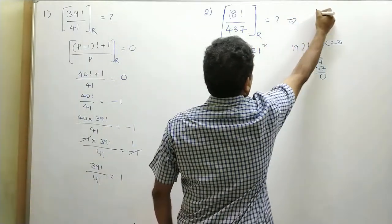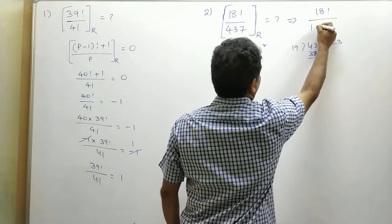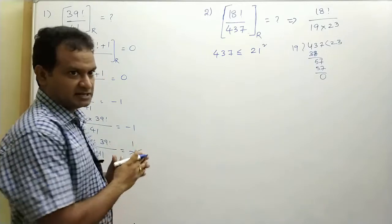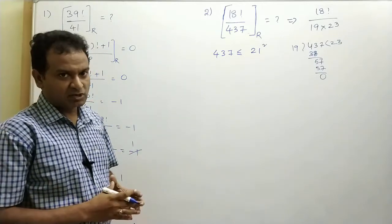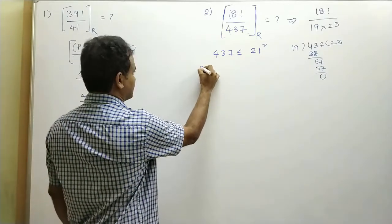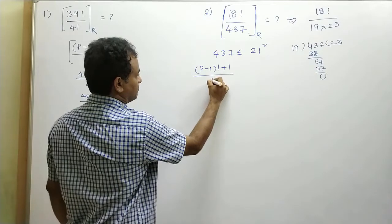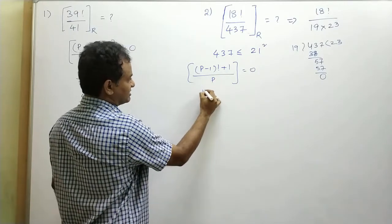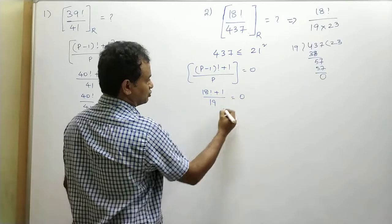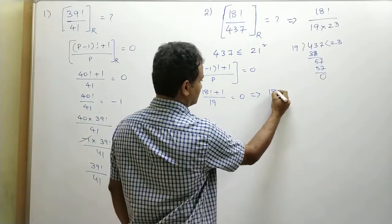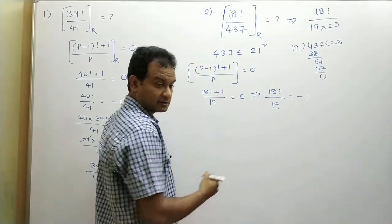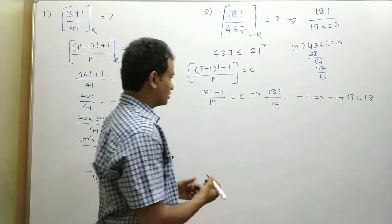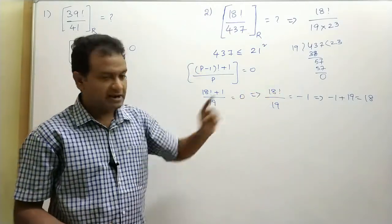Therefore, we need to find the remainder when 18 factorial is divided by 19 into 23. First, let us divide 18 factorial by 19 and check the remainder. 19 is a prime number, so we can apply Wilson's theorem. Wilson's theorem says (p-1) factorial plus 1, when divided by p, the remainder equals 0. Substituting p equal to 19 gives 18 factorial plus 1, divided by 19, equal to 0. Sending the 1 to the other side: 18 factorial when divided by 19 will give you minus 1 as a remainder. Adding the divisor, the remainder equals 18.